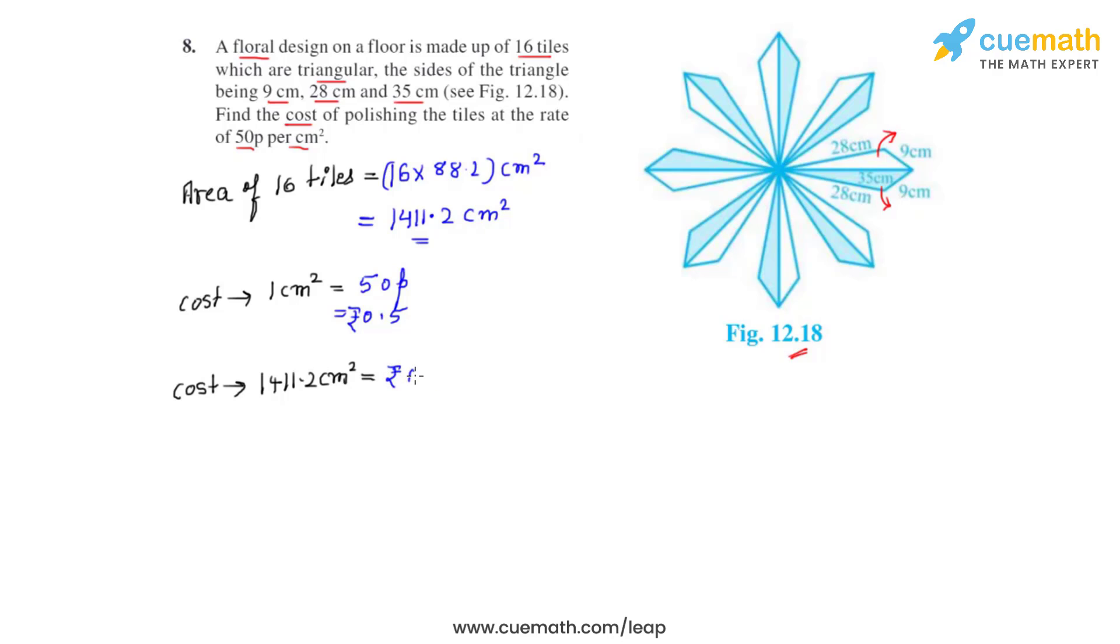So let's find the cost of polishing 1411.2 centimeter square of the tiles. So that can be found by multiplying rupees 0.5 with 1411.2.